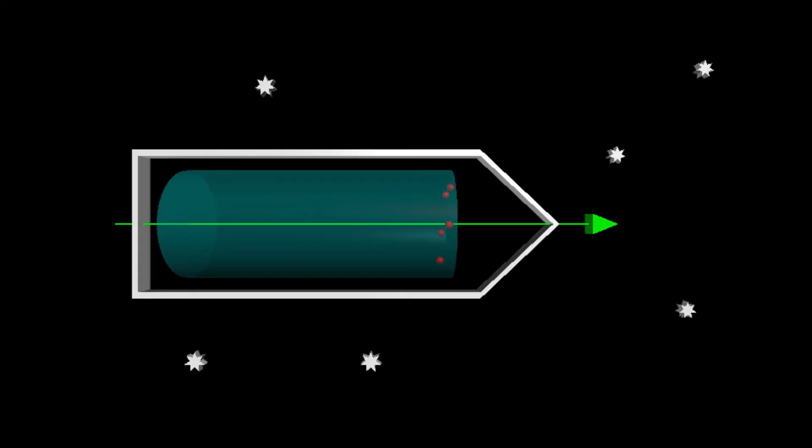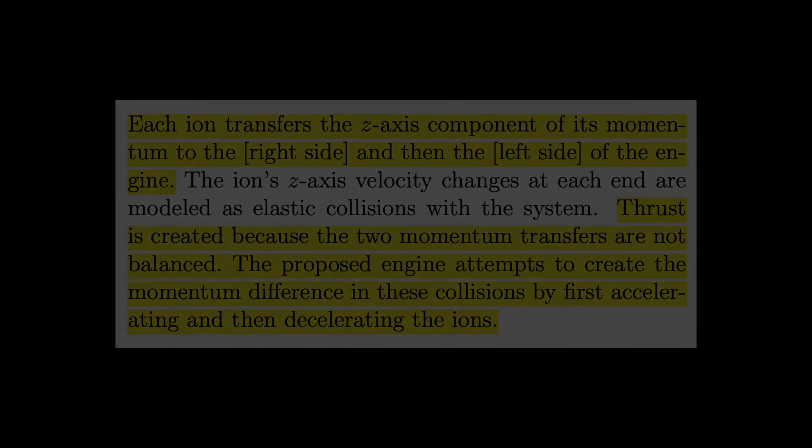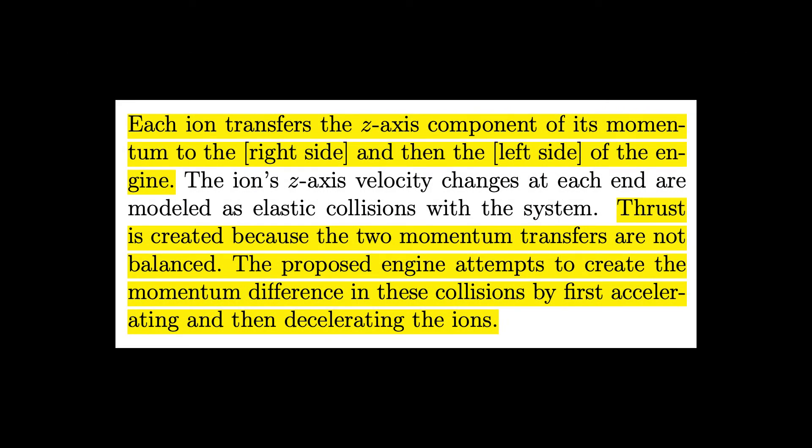That's how the helical engine is supposed to work. You can see the key points in these excerpts from the NASA technical report. Each ion transfers the Z axis component of its momentum to the right side and then the left side of the engine. Thrust is created because the two momentum transfers are not balanced.